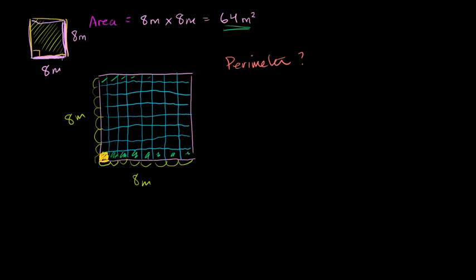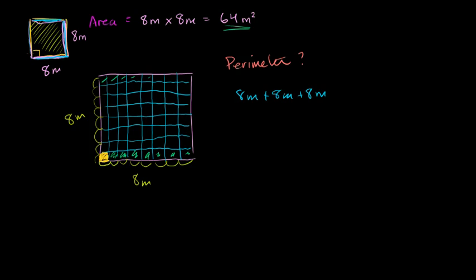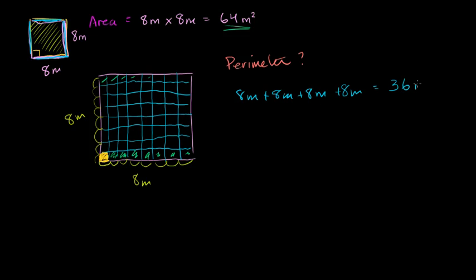We already know this distance on the bottom is 8 meters. And the height right here is 8 meters. Since it's a square, the distance on top is going to be the same as the distance on the bottom, so another 8 meters. And when you go down on the left-hand side, that's going to be another 8 meters. We have four sides, each of them 8 meters. So you add 8 to itself 4 times — that's the same thing as 8 times 4. You get 32 meters.